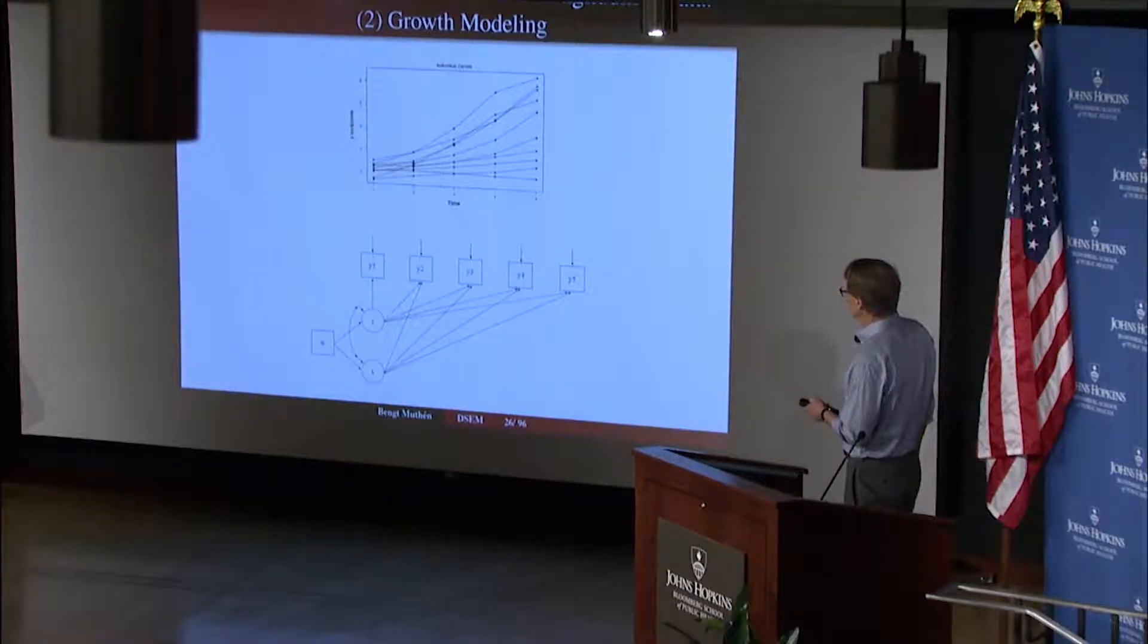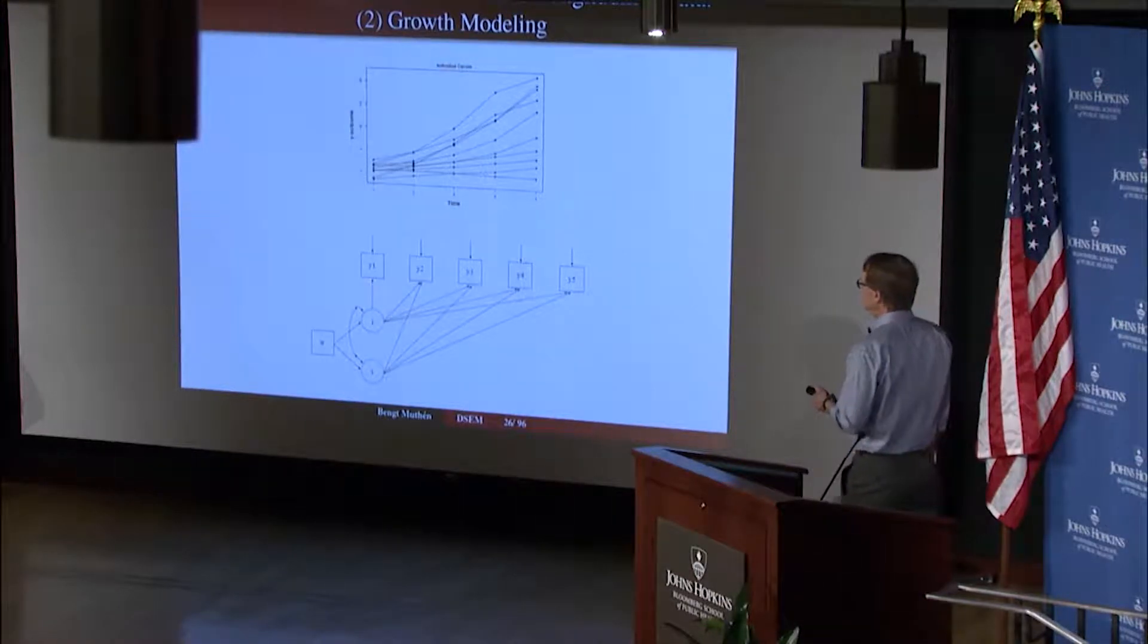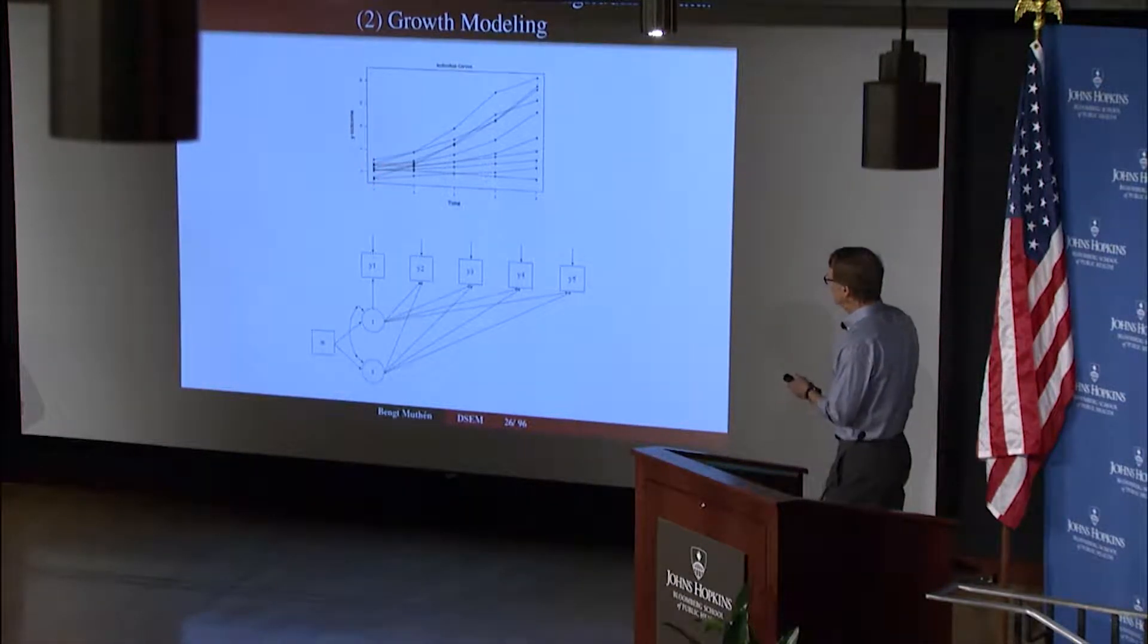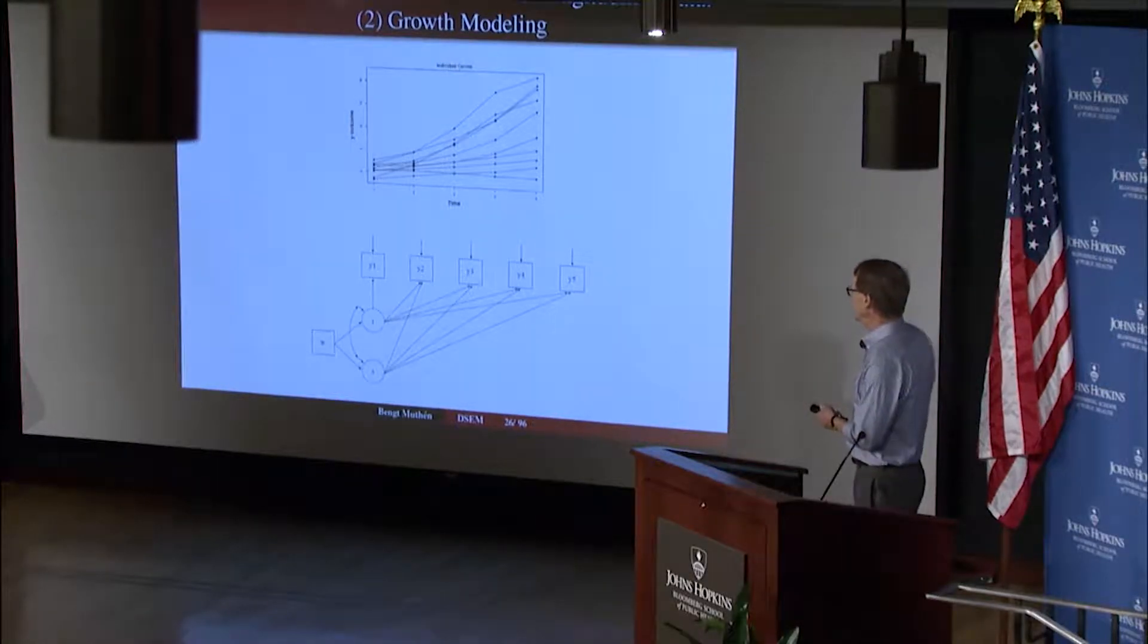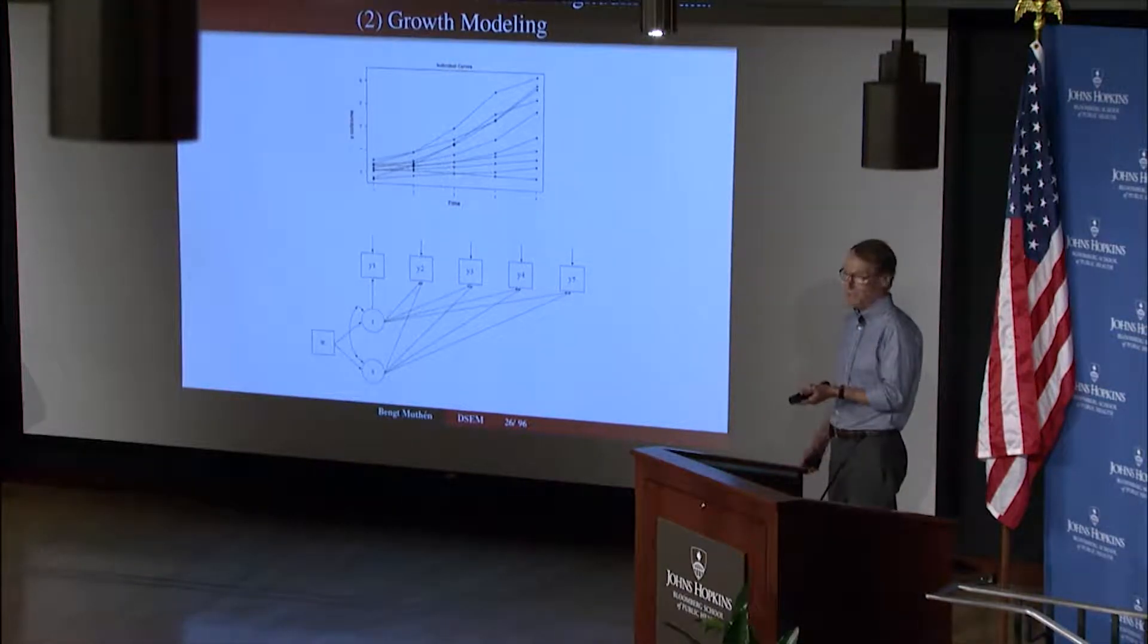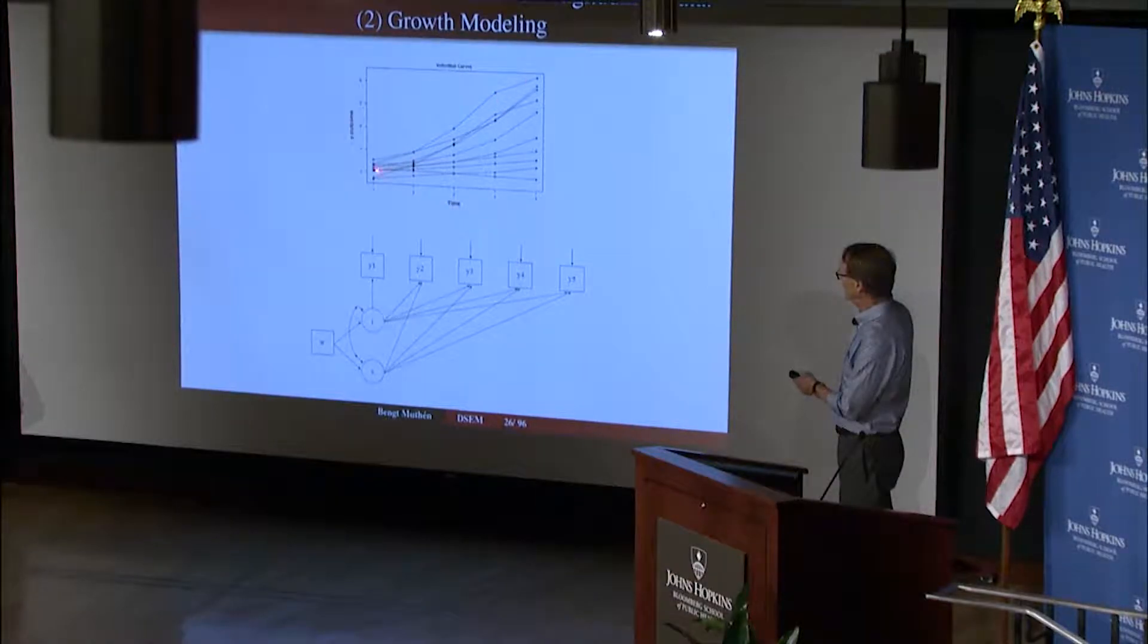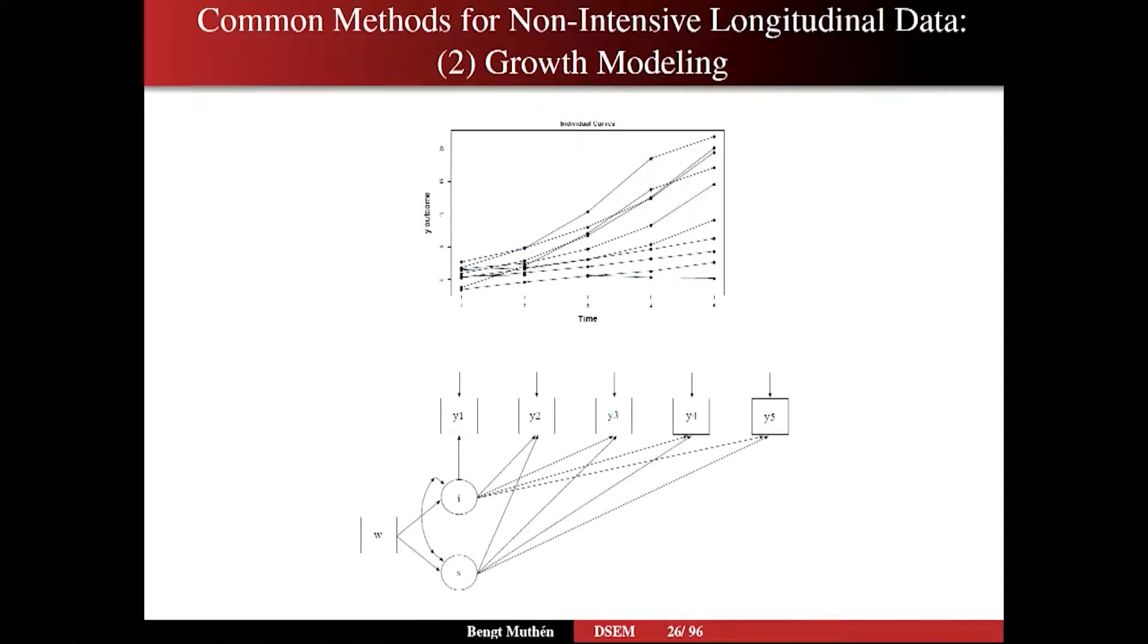They start at a little bit different levels already at the first time point—you have variation here—and you have variation in how quickly they grow. This person doesn't grow at all, this person grows nicely and linearly, these people grow very quickly. So you have variation in the starting point, initial value, and in the growth rate over time. In fact, you could actually estimate these curves or estimate a regression model here: Y regressed on time. You could do that for each person. You have more data points—in this case five—then say two or three in linear regression. You could even do quadratic regression, so for each individual you could fit the curve over time.